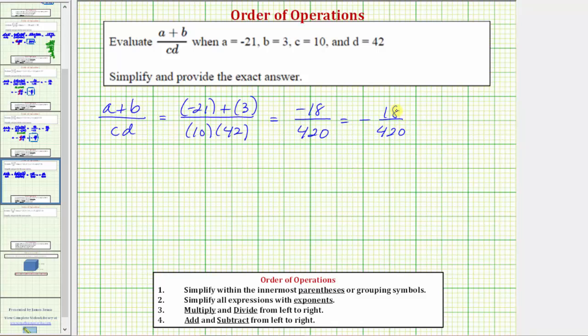And because both numbers are even, we know they at least have a common factor of two. To show this, let's write 18 as two times nine, and 420 as two times 210. Because two divided by two simplifies to one, the fraction simplifies to negative nine over 210.